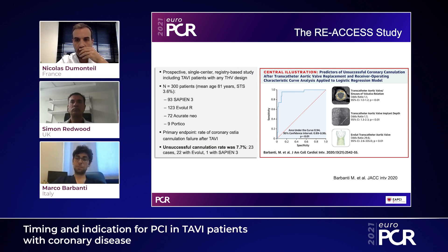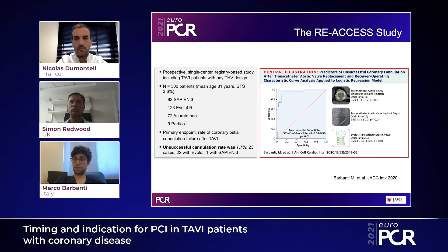Regarding feasibility of coronary access after transcatheter valve implantation, a study published by our group showed that unsuccessful coronary cannulation of the TAVI was reported in 7.7% of patients. We identified several risk factors for this endpoint: oversizing of the sinotubular junction compared with the implanted prosthesis, the size of the prosthesis, implantation depth, and use of an Evolut valve were all associated with increased risk of unsuccessful cannulation.